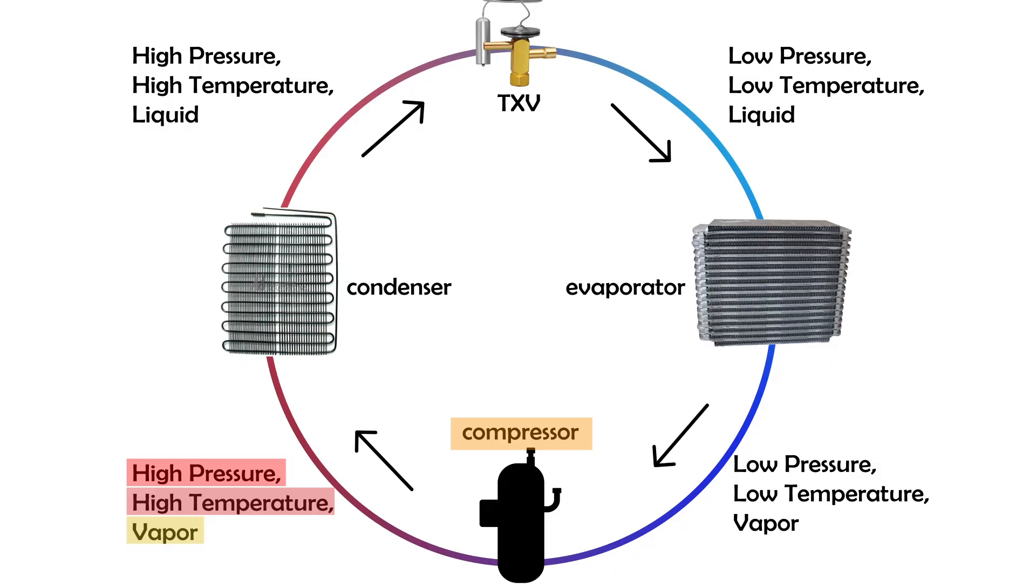Next, the high-pressure, high-temperature vapor enters the condenser. Here's where the first phase change happens, from vapor to liquid. The condenser acts as a heat exchanger, allowing the refrigerant to release heat to the surroundings, typically outside air.